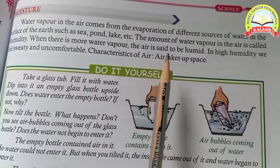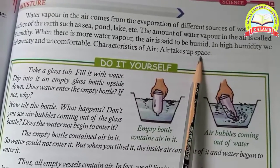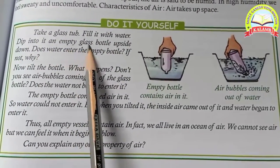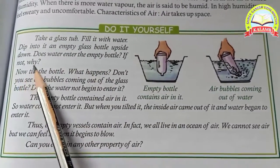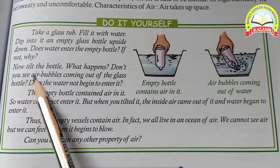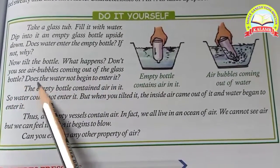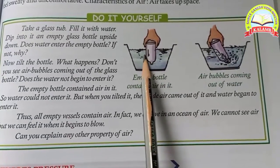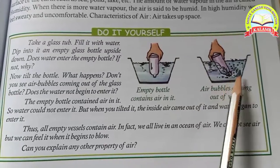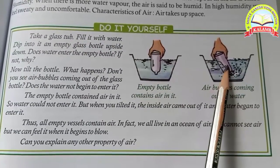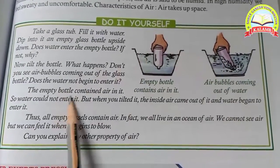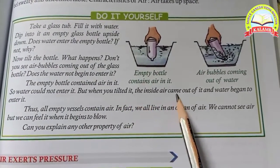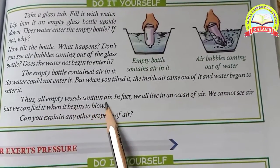Air takes up space. Take an empty glass bottle, turn it upside down, and dip it into water. Does water enter the empty bottle? If not, why? Now tilt the bottle — you will see air bubbles coming out of the glass bottle and water begins to enter it. Thus, all empty vessels contain air.